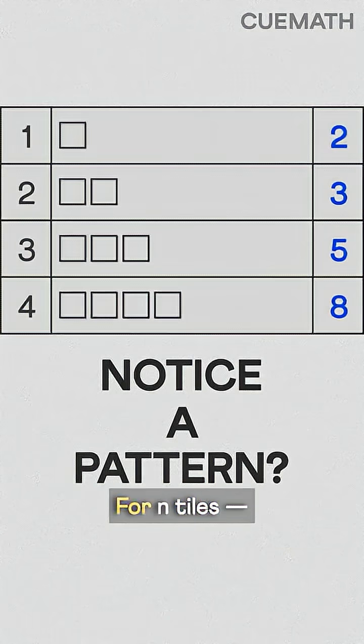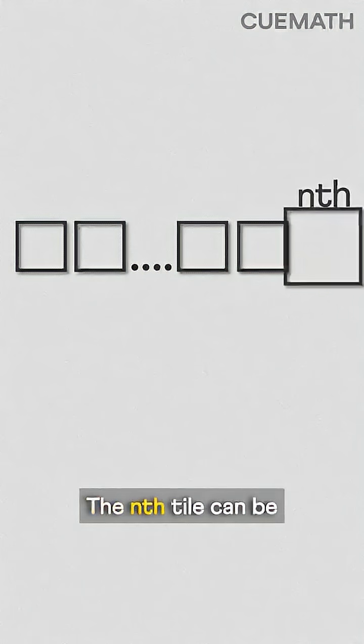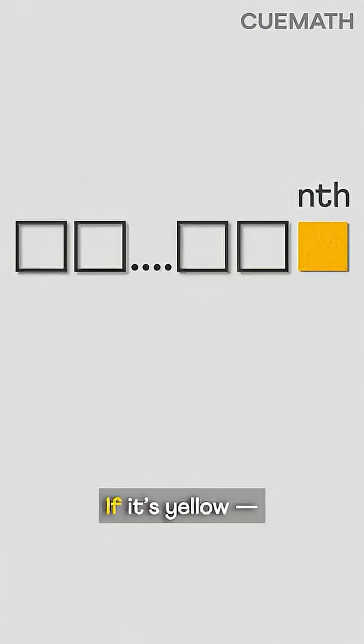Notice a pattern? For n tiles, the nth tile can be either black or yellow. If it's yellow, we're left with n minus one tiles, which we already solved in the previous case.